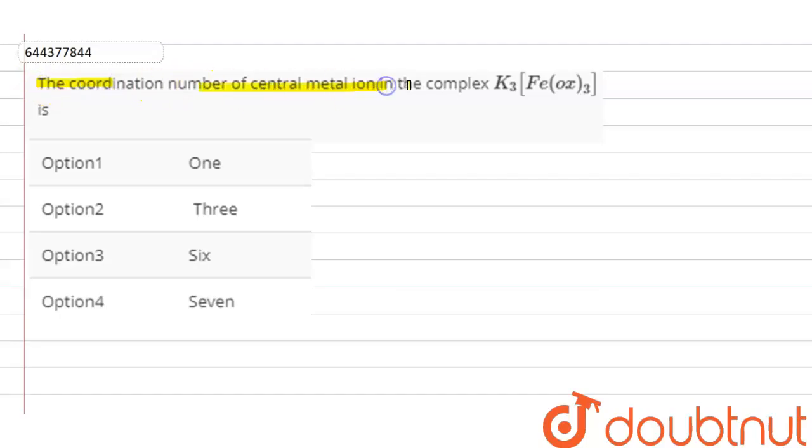of central metal atom in the complex K3[Fe(ox)3] is: Option 1: One, Option 2: Three, Option 3: Six, Option 4: Seven.